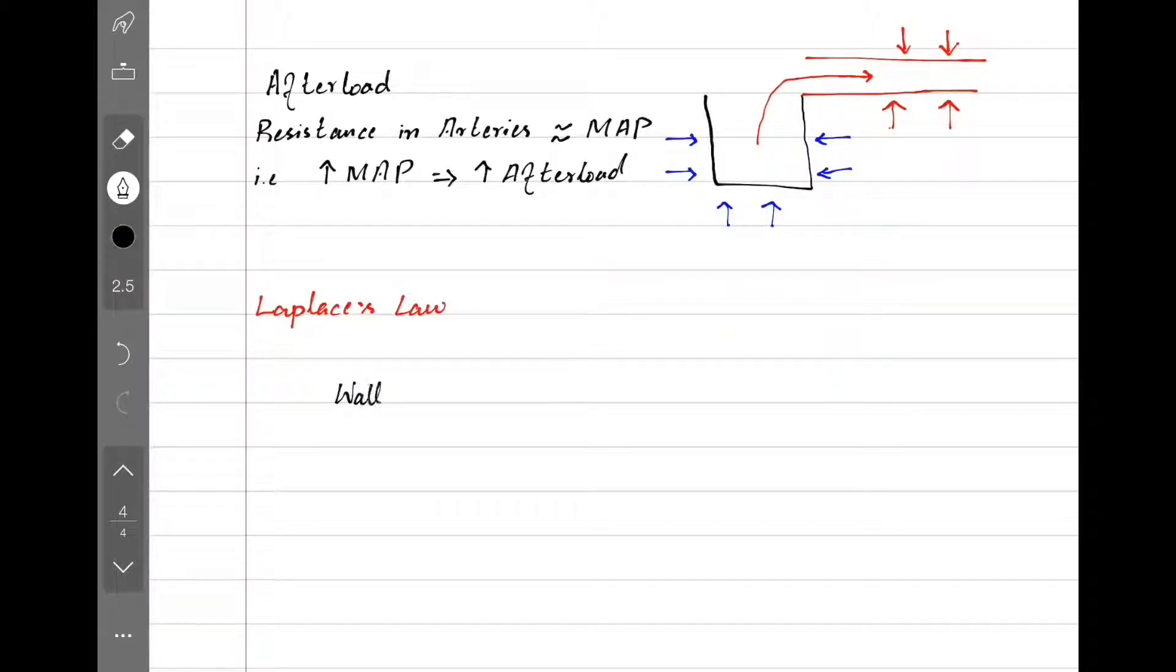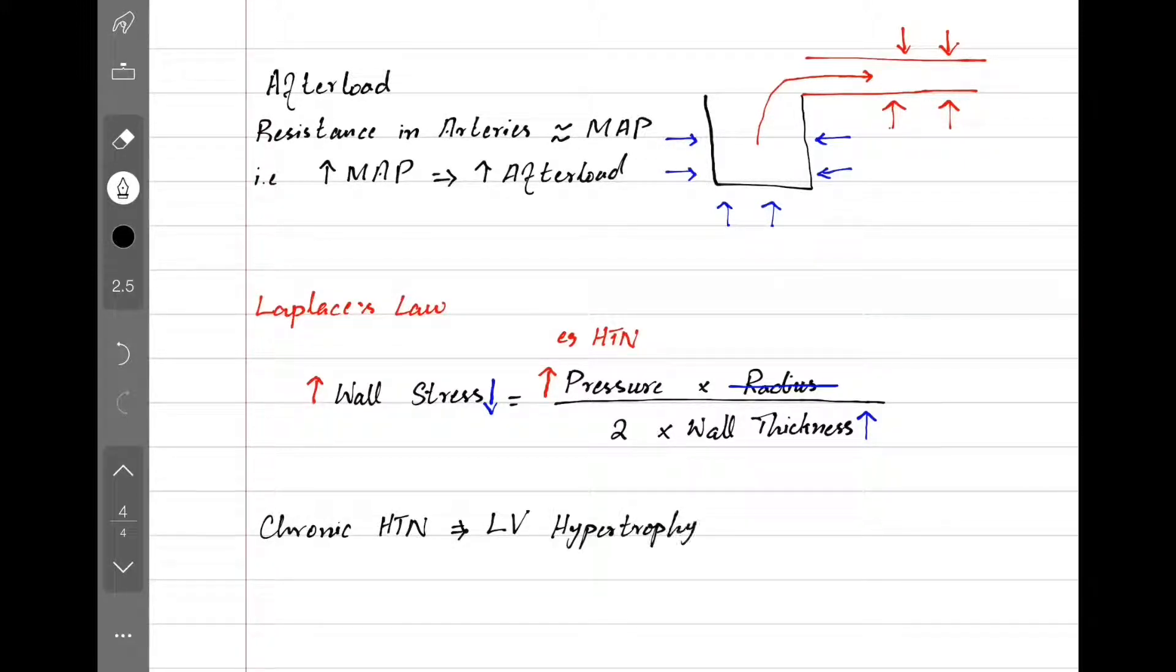Laplace's law says ventricular wall stress equals pressure multiplied by radius divided by two times wall thickness. We can ignore radius for now. As per equation, if we have high pressure, for example hypertension, ventricular wall will have lots of stress all the time. So the heart increases the thickness of its muscle to try to reduce the stress because the heart doesn't like stress. That's how we get left ventricular hypertrophy in chronic hypertension, which is a bad thing.